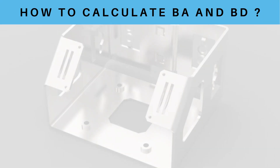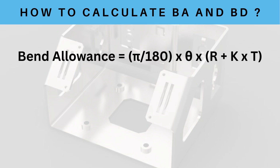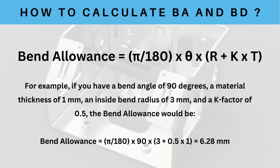Now let's see how to calculate the bend allowance. The formula is: Bend Allowance = (π / 180) × θ × (r + k·t), where θ is the bend angle, r is the inside radius, t is the material thickness, and k is the K-factor. For example, with a bend angle of 90°, material thickness of 1 mm, inside radius of 3 mm, and K-factor of 0.5, you get a bend allowance of 6.28 mm.